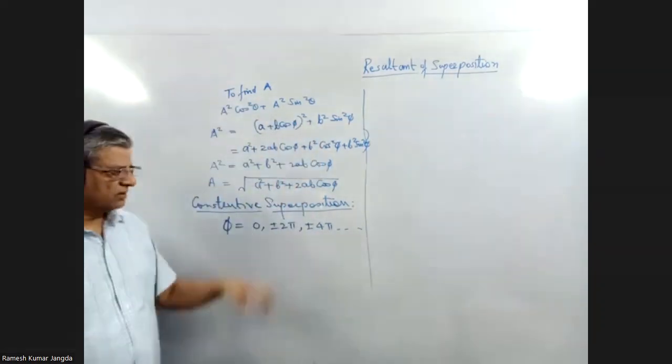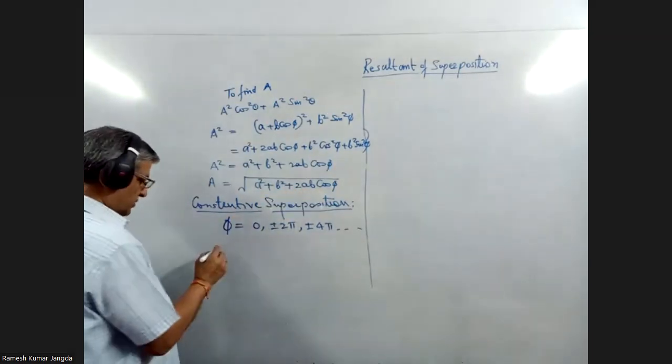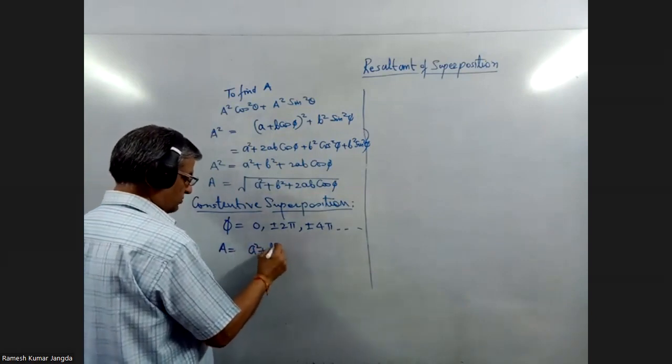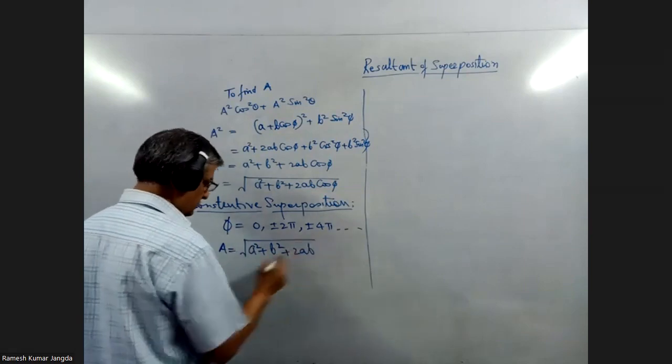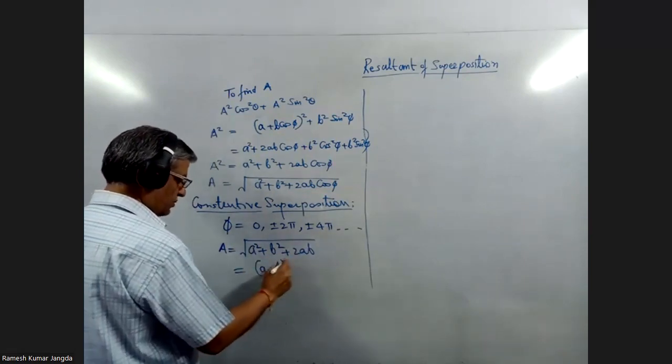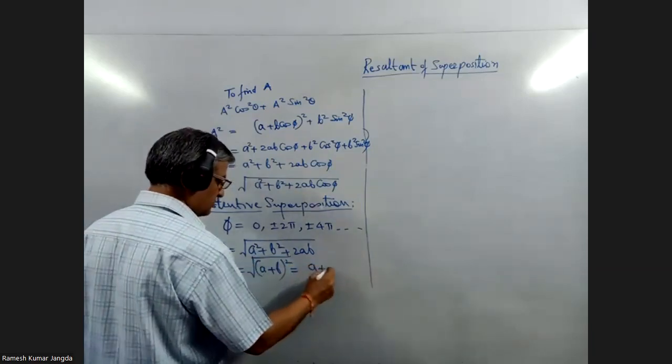So for all these angles, this expression A will become a square plus b square plus 2ab under the root, which is a plus b whole square, or a plus b.